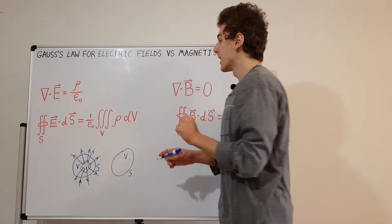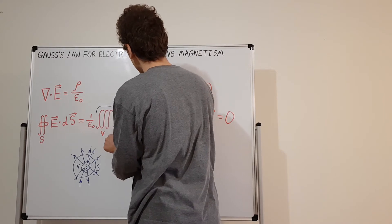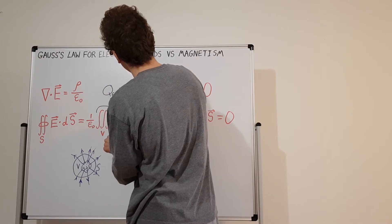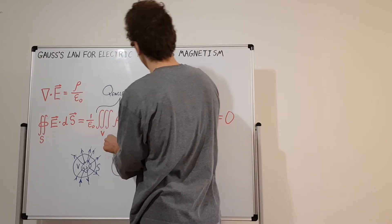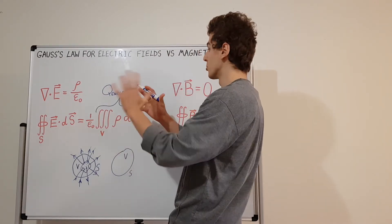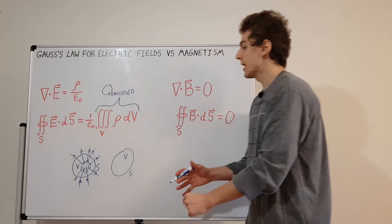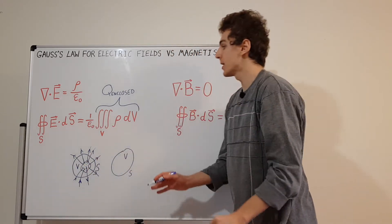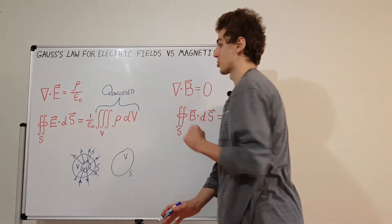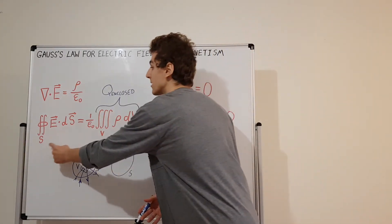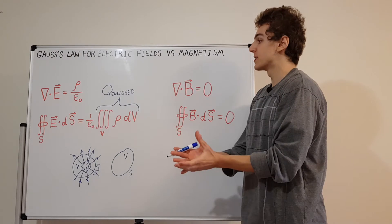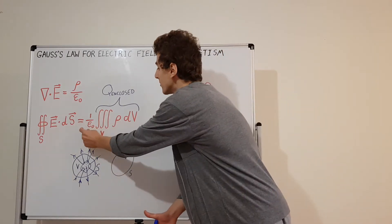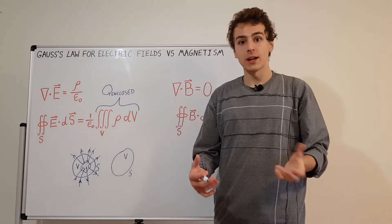The volume integral of the charge density over V is actually the enclosed charge Q. You assign a charge density to every point, integrate over the volume, and that gives you the total charge. So the total flux through surface S, given by the surface integral, is proportional to the charge enclosed. There is a constant epsilon naught — the permittivity of free space — on the right hand side.